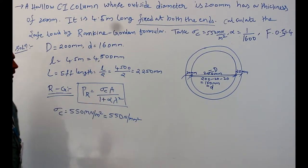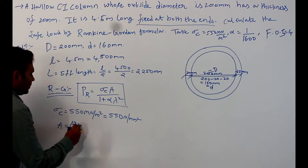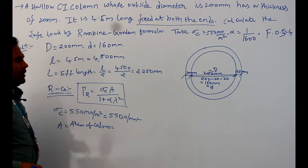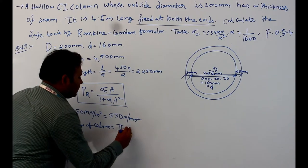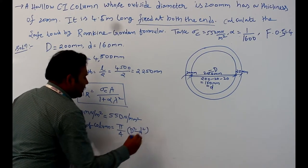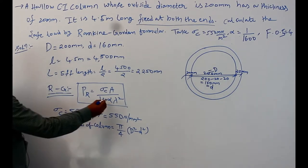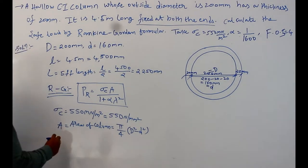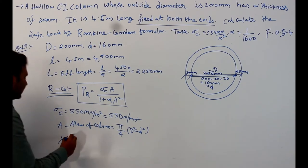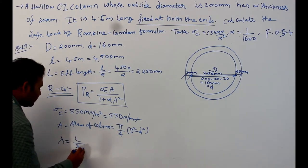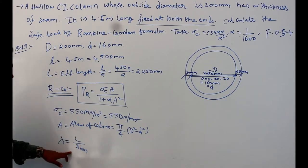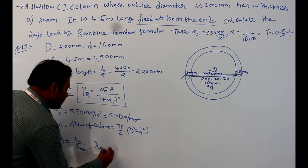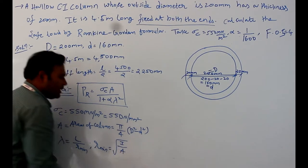A means the cross-sectional area of the column. For a hollow section, A equals pi by 4 into capital D squared minus small d squared. Alpha is Rankine's constant given as 1 by 1600. Lambda is the slenderness ratio, equal to L by R_minimum, where R_minimum equals the square root of I by A.